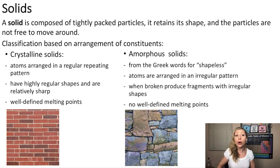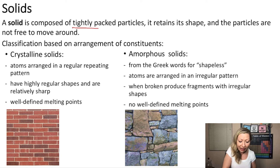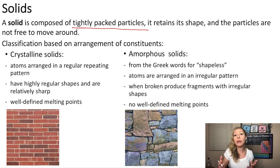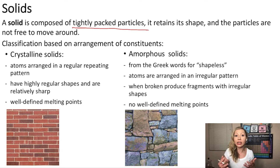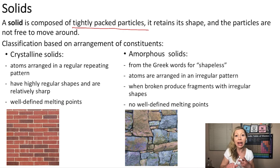We know already that solids are composed of tightly packed particles, they retain their shape, and the particles are not free to move around — they are just kind of vibrating in one place. We can classify the solids based on the arrangement of their constituents, whether those are atoms, ions, or molecules.